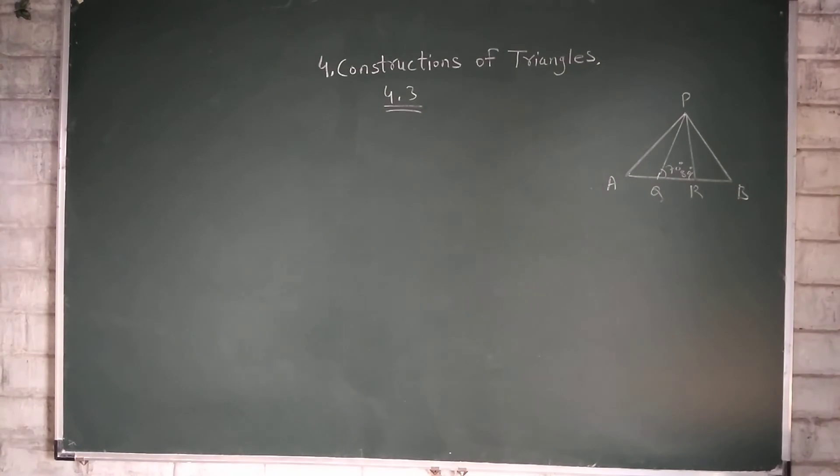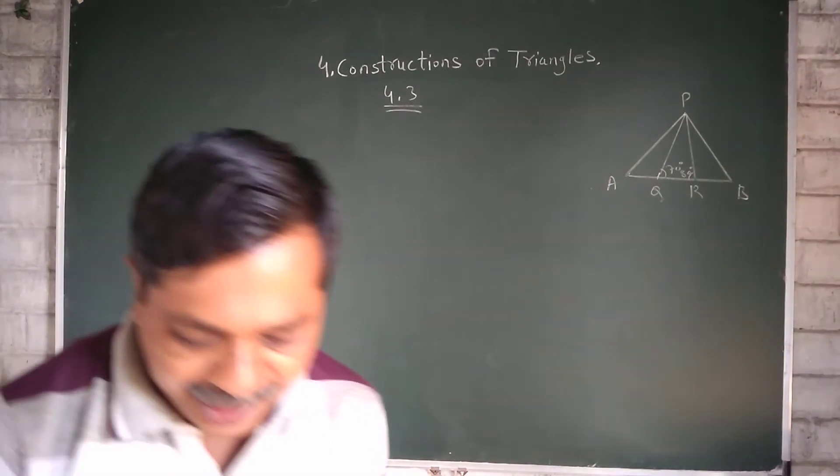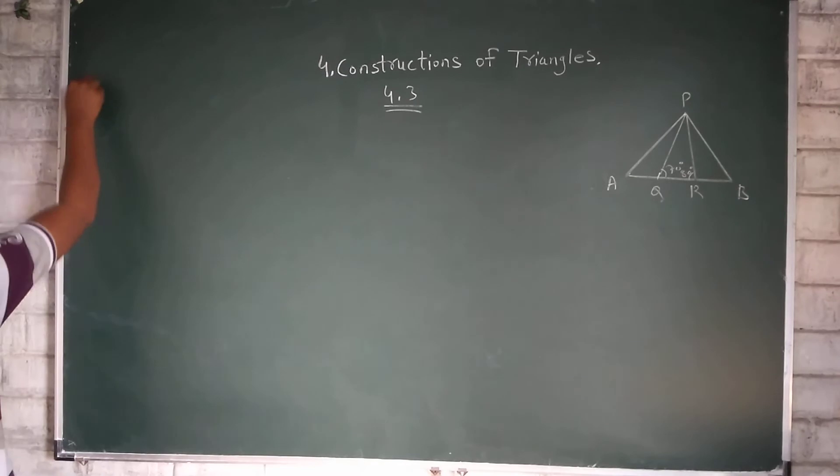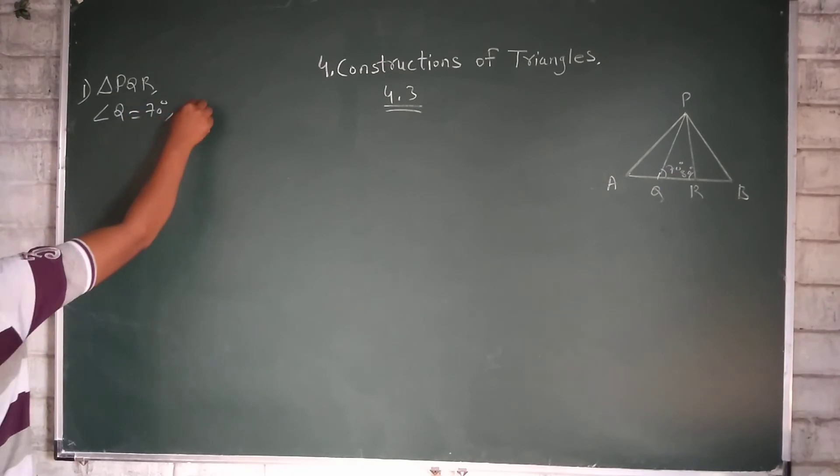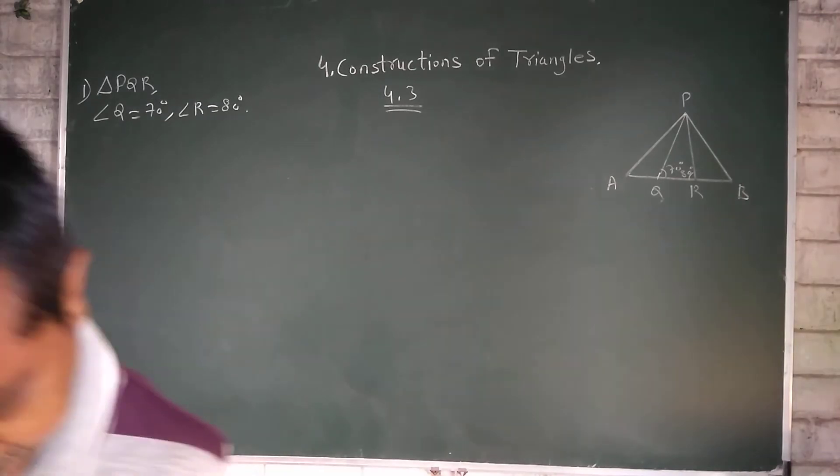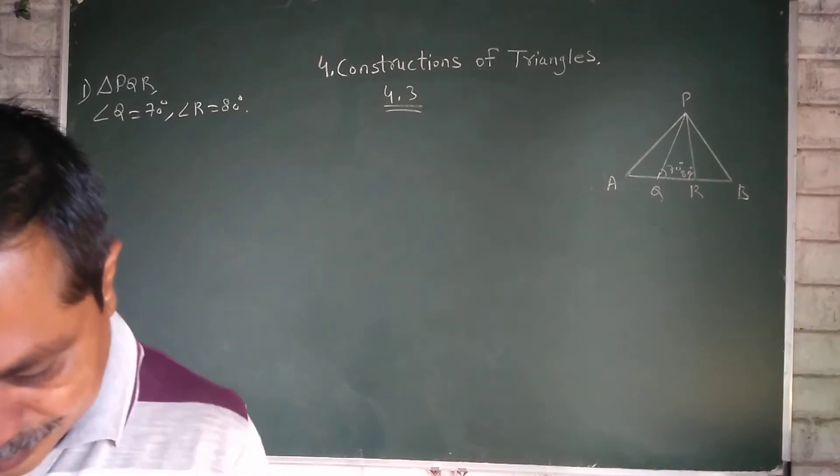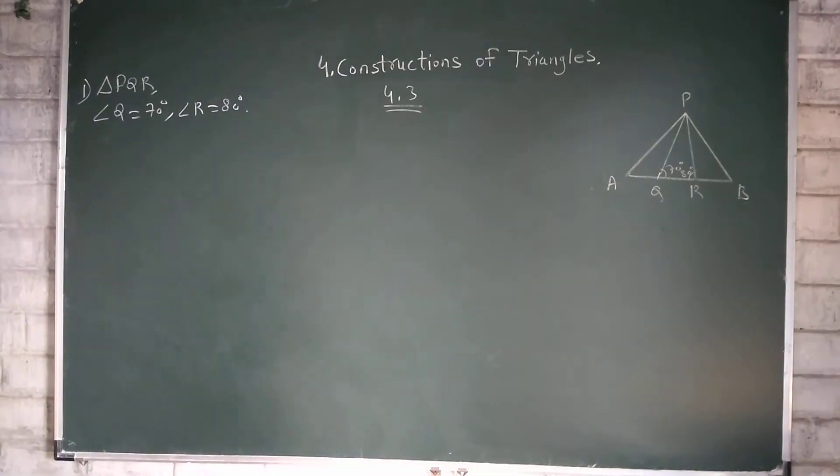Construct Triangle PQR, in which Angle Q is 70 degree, Angle R is 80 degree, and PQ plus QR plus PR is given 9.5 cm.